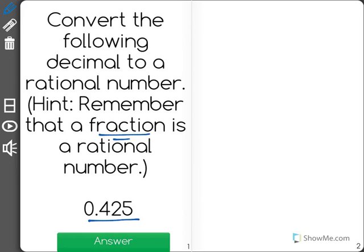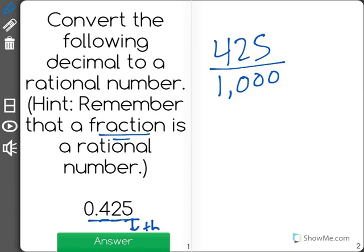What this really means is 425 over 1,000, right? Because 425 ends in the thousandths place. So it's equal to 425 thousandths. Now what we need to do with this ratio is simplify it.